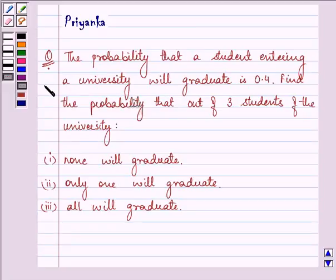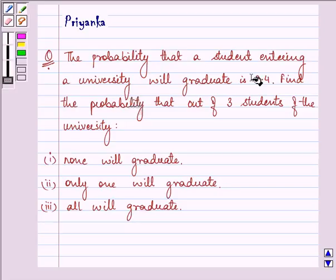Hi and how are you all today? The question says the probability that a student entering a university will graduate is 0.4.